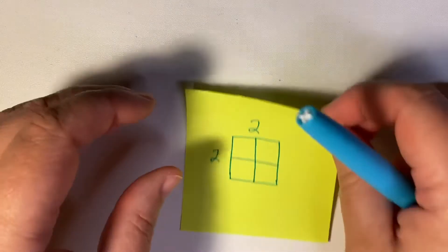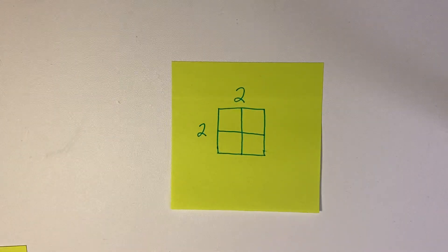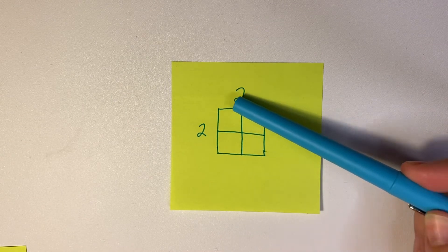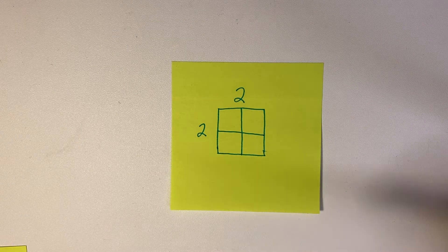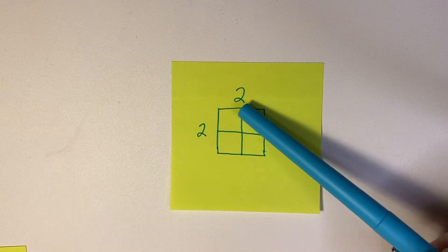We're going to look at this example here. You'll notice that it's two on this side and two on this side. It doesn't matter if it's centimeters, inches, or feet—the calculation is going to be the same.